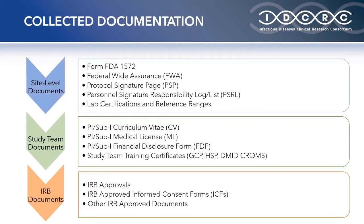This slide overviews all of the documentation collected by FHI. Each document has been broken down into one of three categories: site-level documents, study team documents, and IRB documents. Starting with site-level documents, the most critical form is FDA Form 1572 — essentially a statement of the investigator, filed for clinical trials involving investigational new drugs (INDs). For non-IND studies, we collect the Investigator of Record form (IOR), which is very similar to the 1572. The next document is the Federal-Wide Assurance (FWA), a compliance declaration with federal regulations for the protection of human subjects in research.